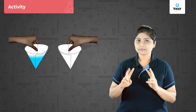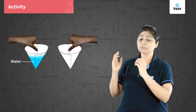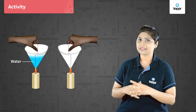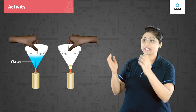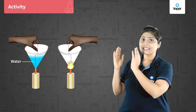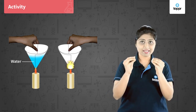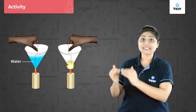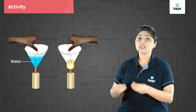Now let us understand ignition temperature better with an activity. We take two paper cups. In one of the cups we put 50 ml of water. Now let's start burning both the cups with a candle. You observe that the empty paper cup has started burning, whereas the paper cup with water has not yet started burning. This indicates that the empty paper cup has reached its ignition temperature, so it has started burning because we are supplying continuous heat to it.